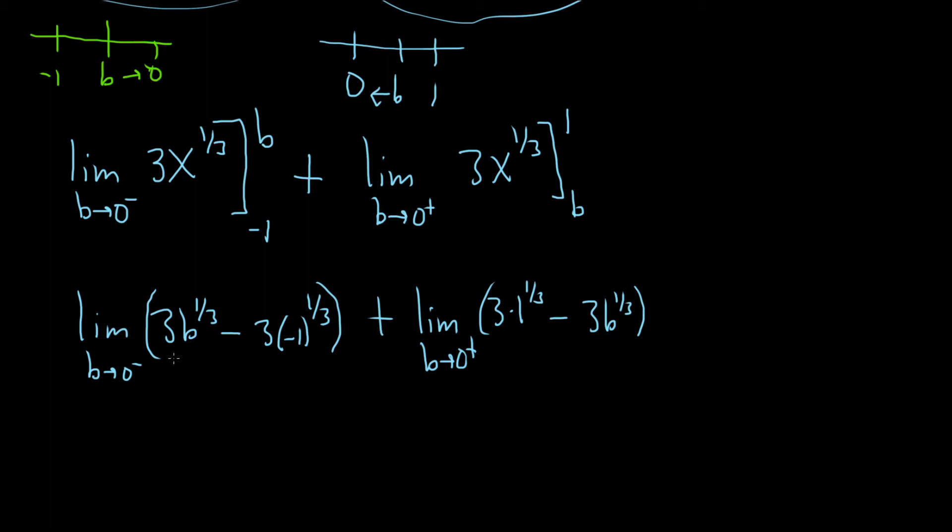We can go ahead and plug in 0 here. It's nice and continuous. There's no issues. We're not dividing by 0. We can drop the limit sign now. So we get 3 times, well, 0 to the 1 third is 0. And then this piece here, negative 1 to the 1 third is negative 1. So negative and negative is positive, so we get a plus 3.